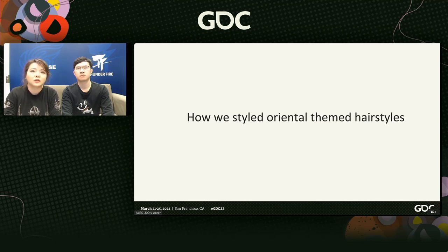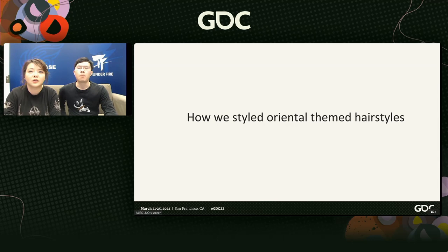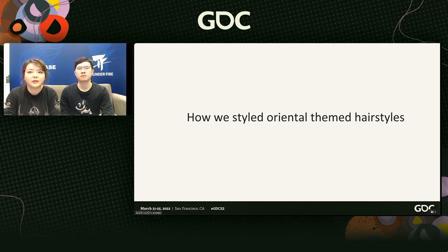After briefly talking about the similarities and differences mentioned above, let me introduce how we design oriental hairstyles. As mentioned earlier, both Eastern and Western games have one thing in common in aesthetics: many hairstyle elements are based on the extraction of hairstyle elements from life. But in oriental themed games, many hairstyles can hardly be found in real life. Many shapes cannot be restored in real life because of anti-gravity. So how do we find elements? This goes back to Chinese painting.